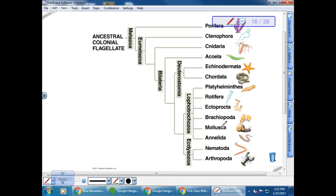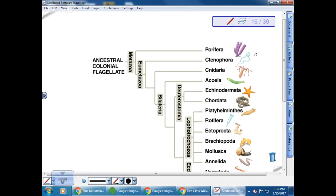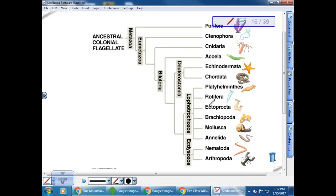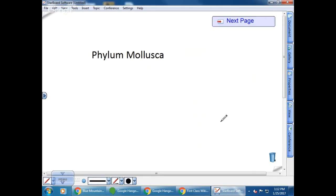So the next group we're going to talk about are the molluscs. You do not need to know these groups that we haven't talked about, so Ctenophora, Acoela, Ectoprocta, or Brachiopoda. We're just going to move on to the molluscs. Mollusca means soft-bodied, so mollusc means soft.